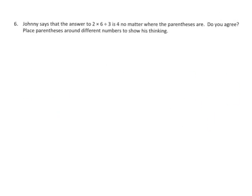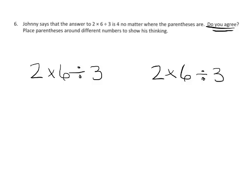And the last problem for this video says Johnny says that the answer to 2 times 6 divided by 3 is equal to 4 no matter where the parentheses are. Well, we just learned that usually it matters where the parentheses are. Because if you put the parentheses in a different location, you're going to get a different answer. Now Johnny is saying, wait a second, I found an example where it doesn't give you a different answer. Well, let's see if we agree. Because we're supposed to see if we agree.